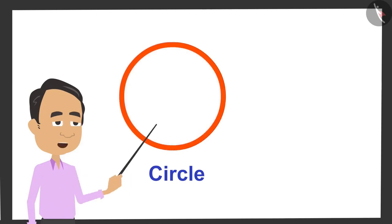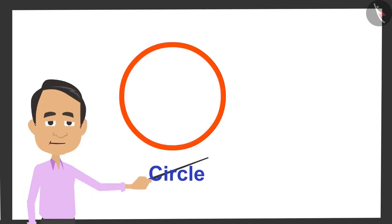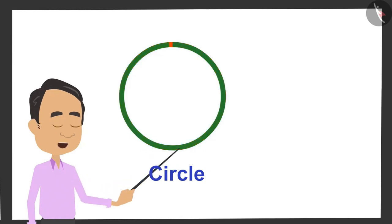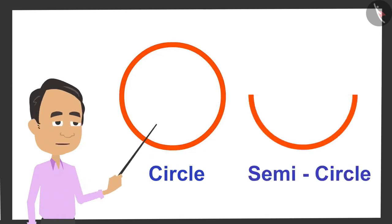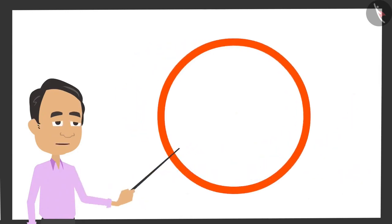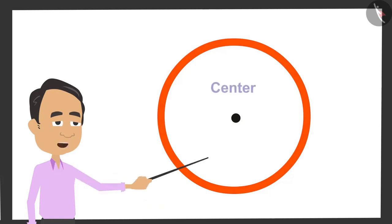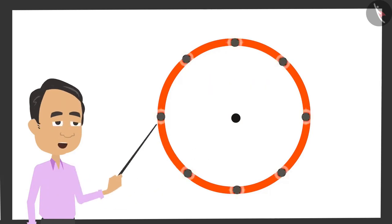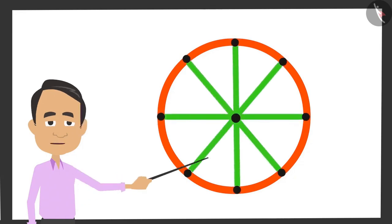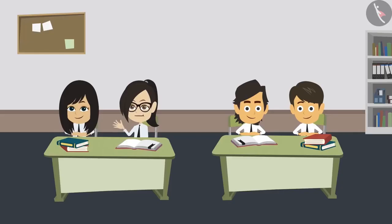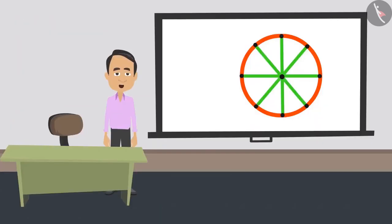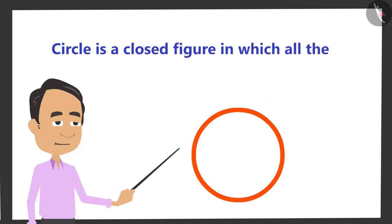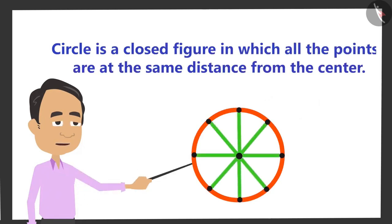The teacher makes a simple drawing of the wheel. The first thing to know is that a circle is a closed shape because it has a boundary on all sides. The dot in the middle is the center of the circle. All lines going from the center to the boundary are equal in length. Therefore, a circle is a closed figure in which all points are at equal distance from the center.